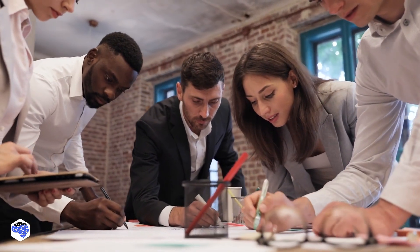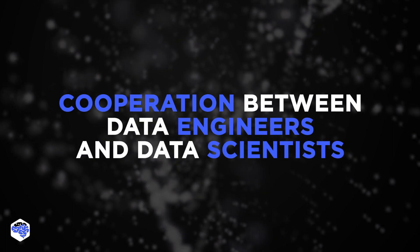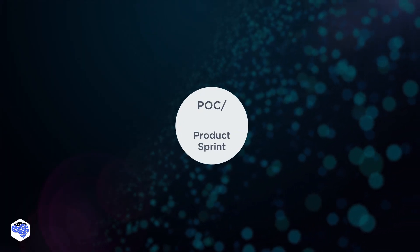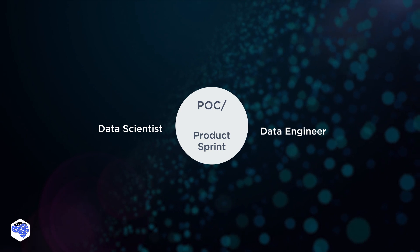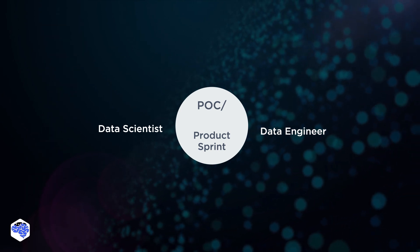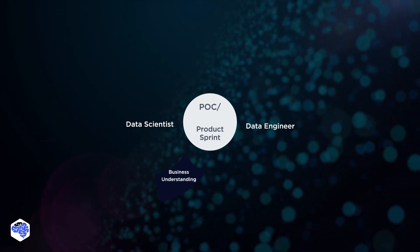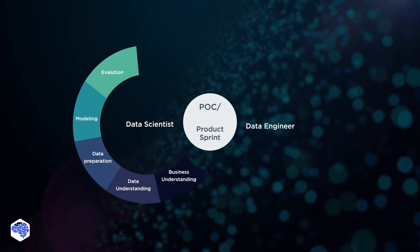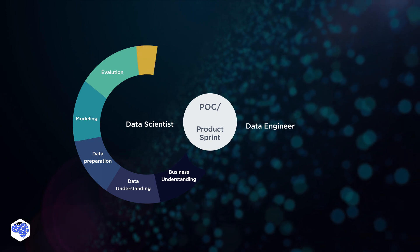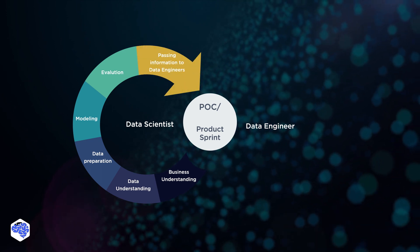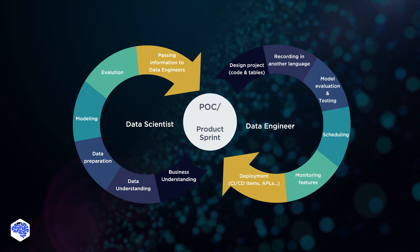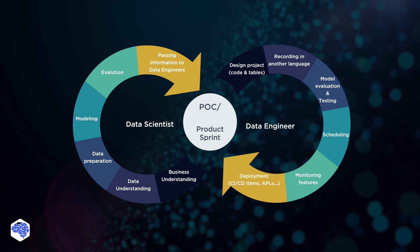Finally, let us share our experience at Jelvix of organizing cooperation between data engineers and data scientists. Usually, our main priority is to ensure transparency of workflow and to synchronize data scientists and engineers with the entire team. A data scientist starts the sprint by understanding business requirements and moves further on with data preparation, modeling, and evaluation. They finish their part by passing the results to data engineers, who perform coding, model evaluation and testing, scheduling, features monitoring, and finally, going into deployment.